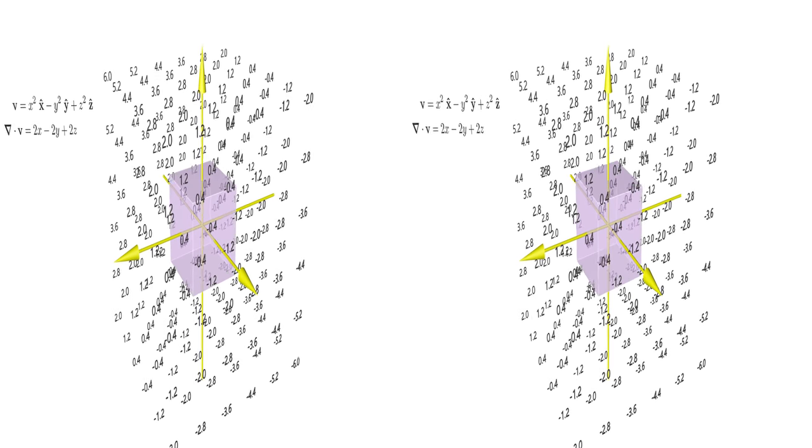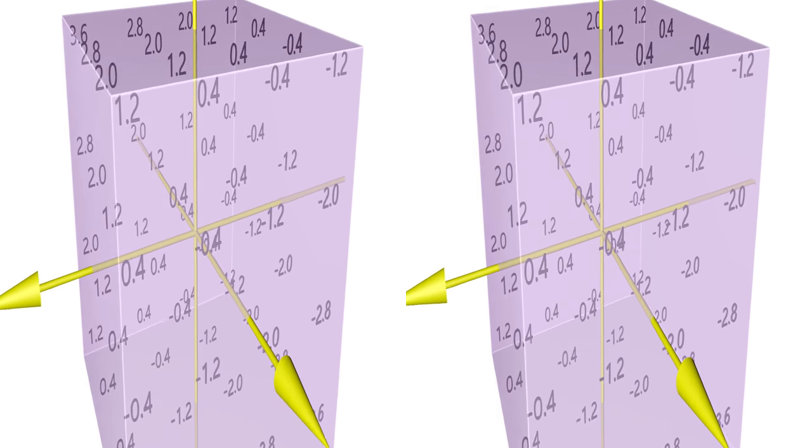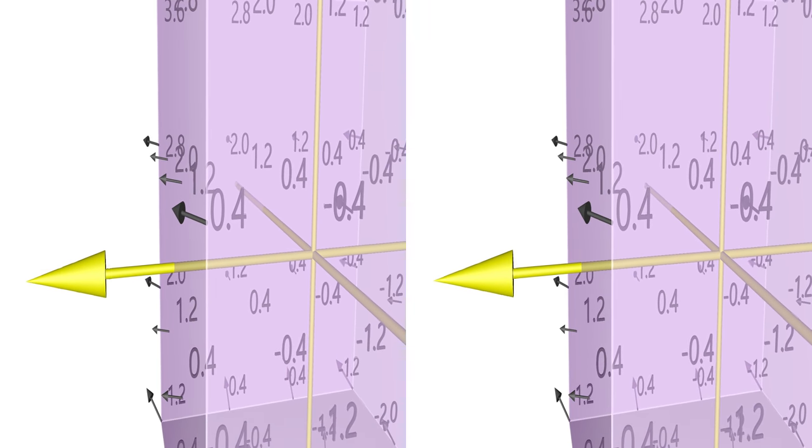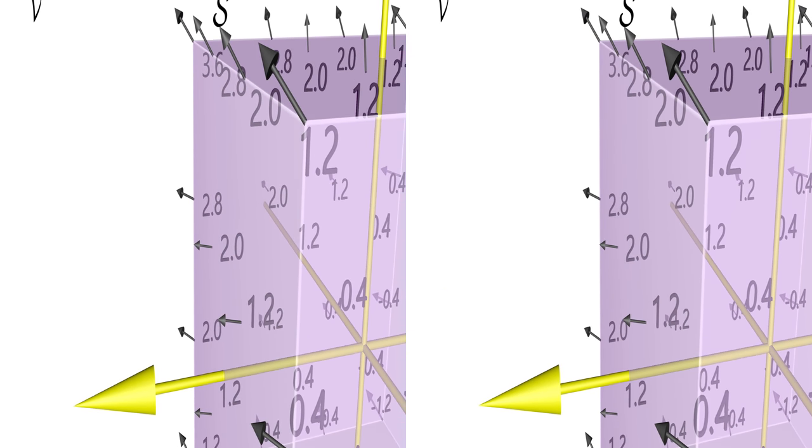If you would integrate the divergence over some volume, you can imagine that all the individual sources and sinks add up constructively and destructively and you might as well determine the effective amount of flux that leaves the volume.